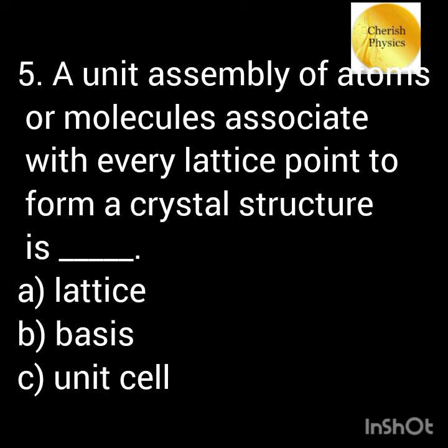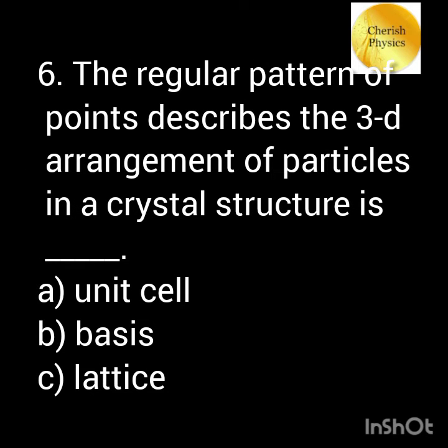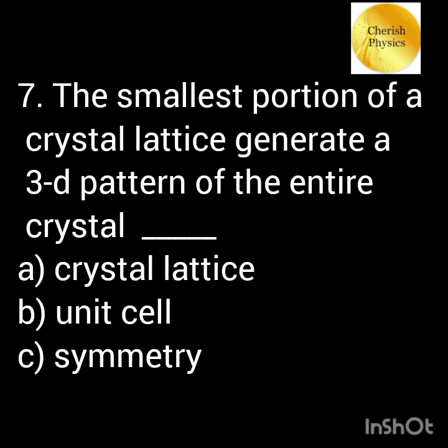The unit assembly of atoms or molecules associated with every lattice point — the regular pattern of points describes the 3D arrangement of particles. The smallest portion of a crystal lattice is the unit cell.